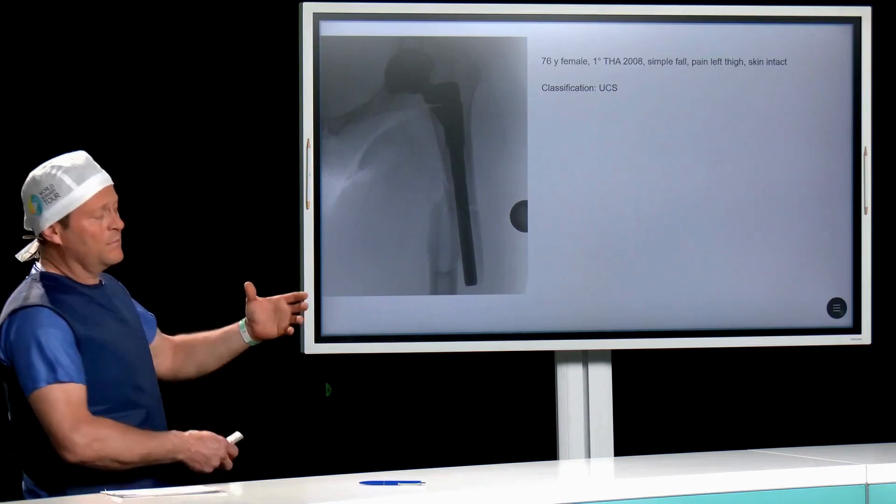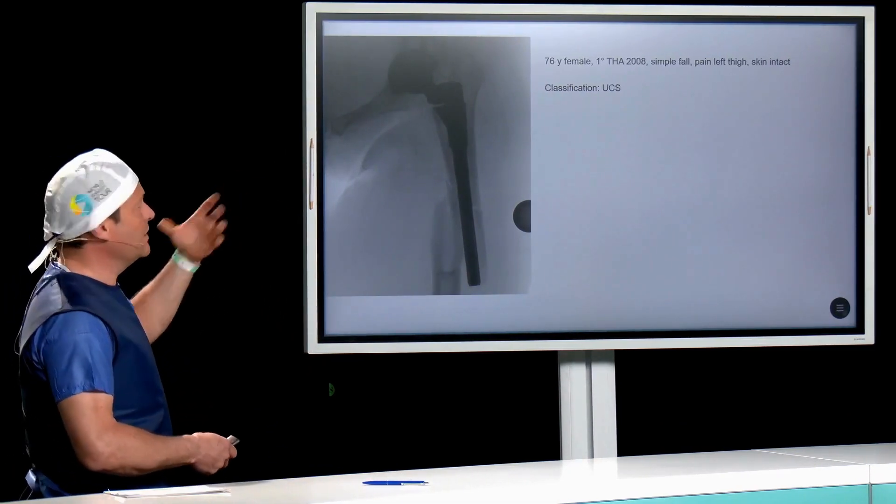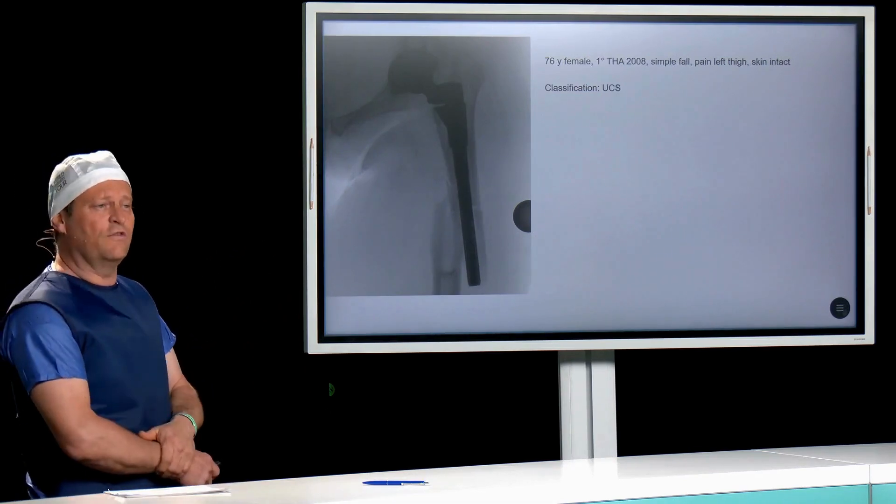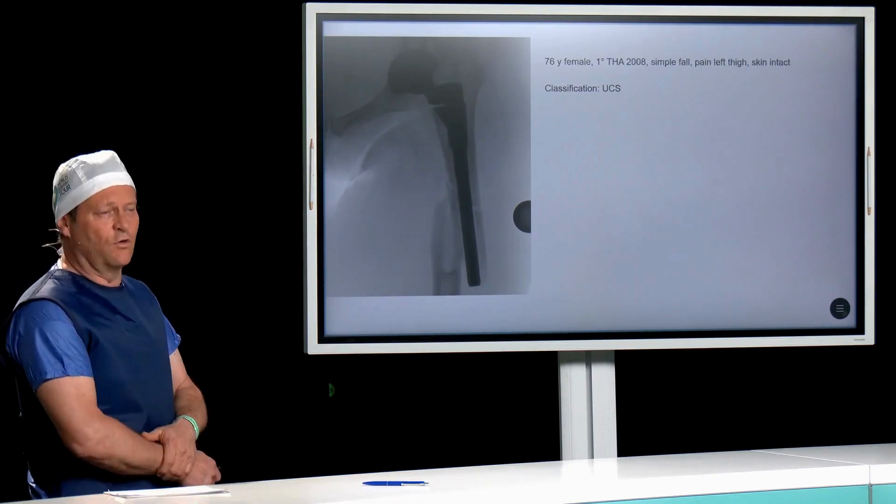So when we come to surgery, I think we always have to classify the fracture itself. I think I use, or we use, the unified classification system, so UCS. Then the hip joint is the forward joint.